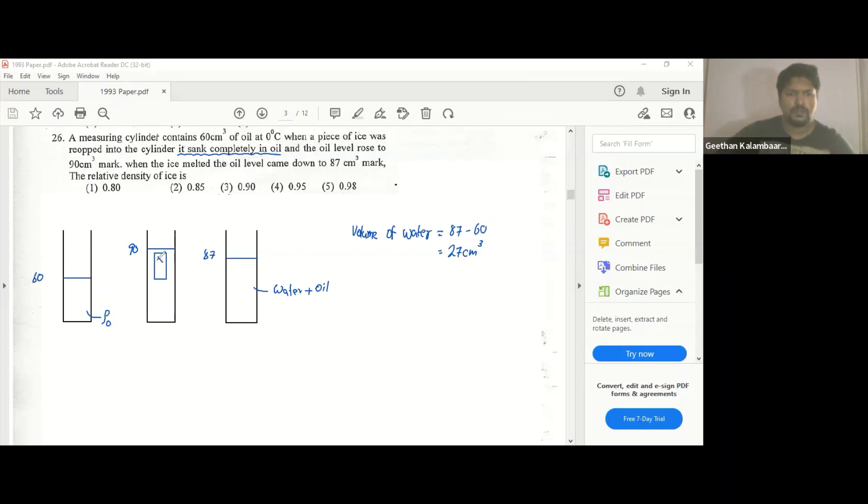So what's the volume of ice? That's the volume of ice. 30 cubic centimeters, because now it's 90, before it was 60, so it's 30 cubic centimeters.